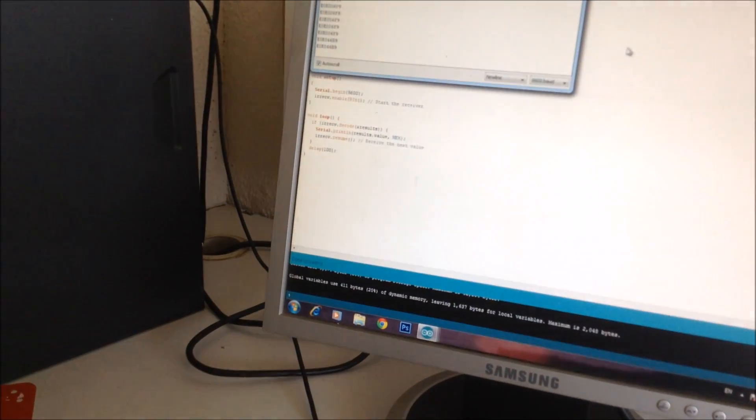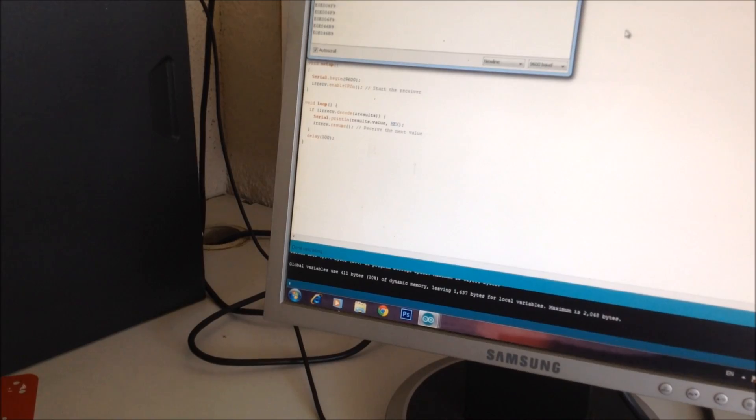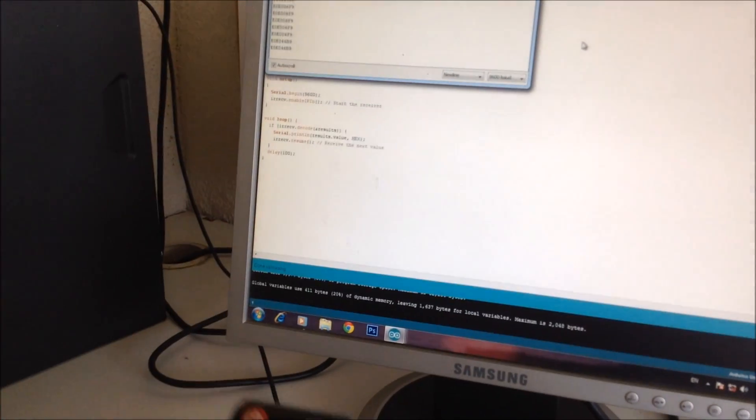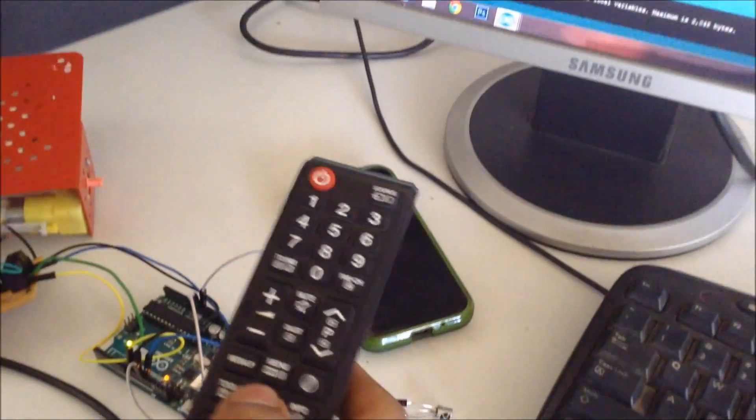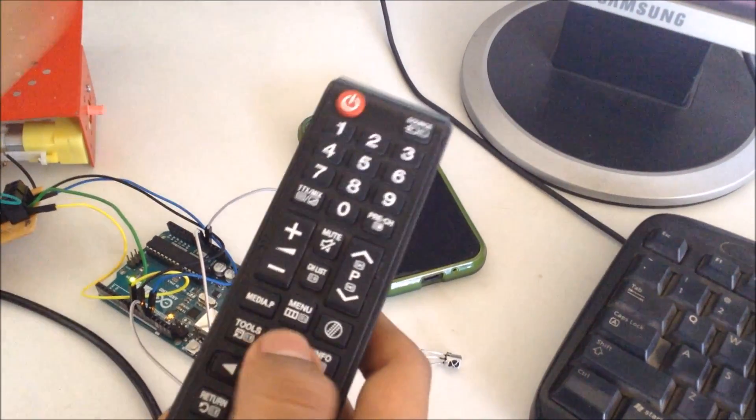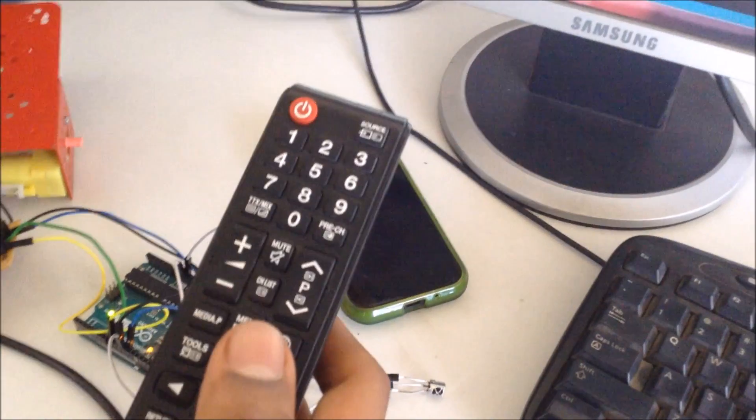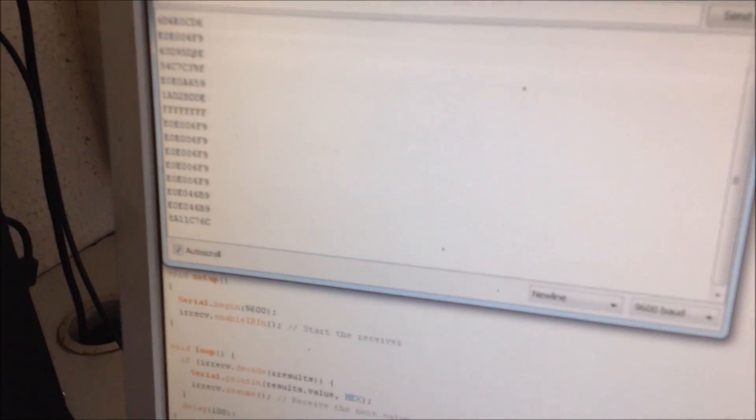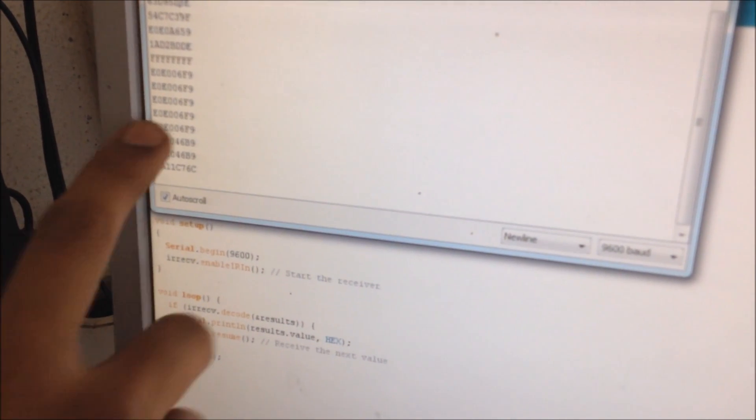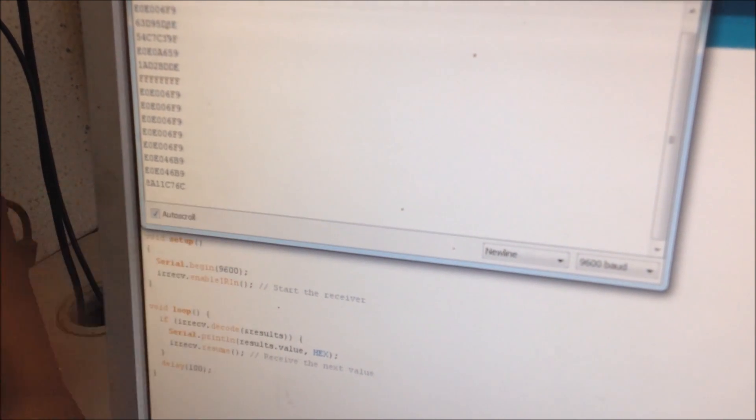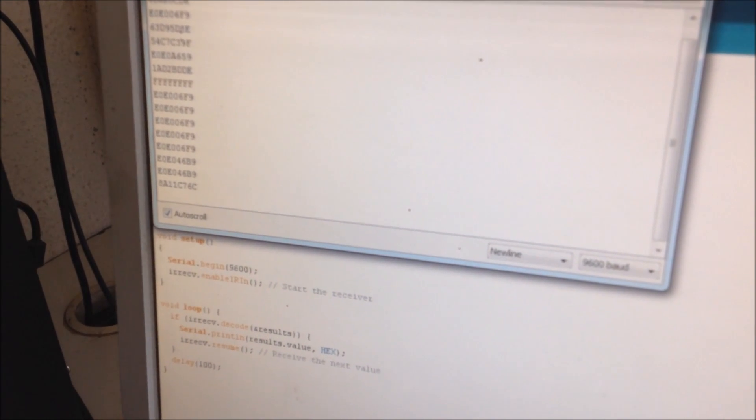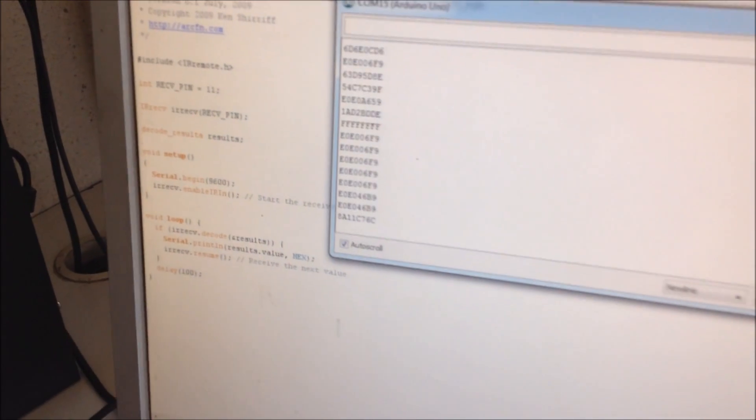Every time you press it, you get a feedback there. So what you want to do is you want to press those four buttons, five buttons, one is the stop button. And read the code there, write it down somewhere. Write down the code somewhere and then use it for the program. So just make sure like I have this code here, E006F9 for my forward button. So let me write it down somewhere. And I'm going to use this value and replace it in the main code.